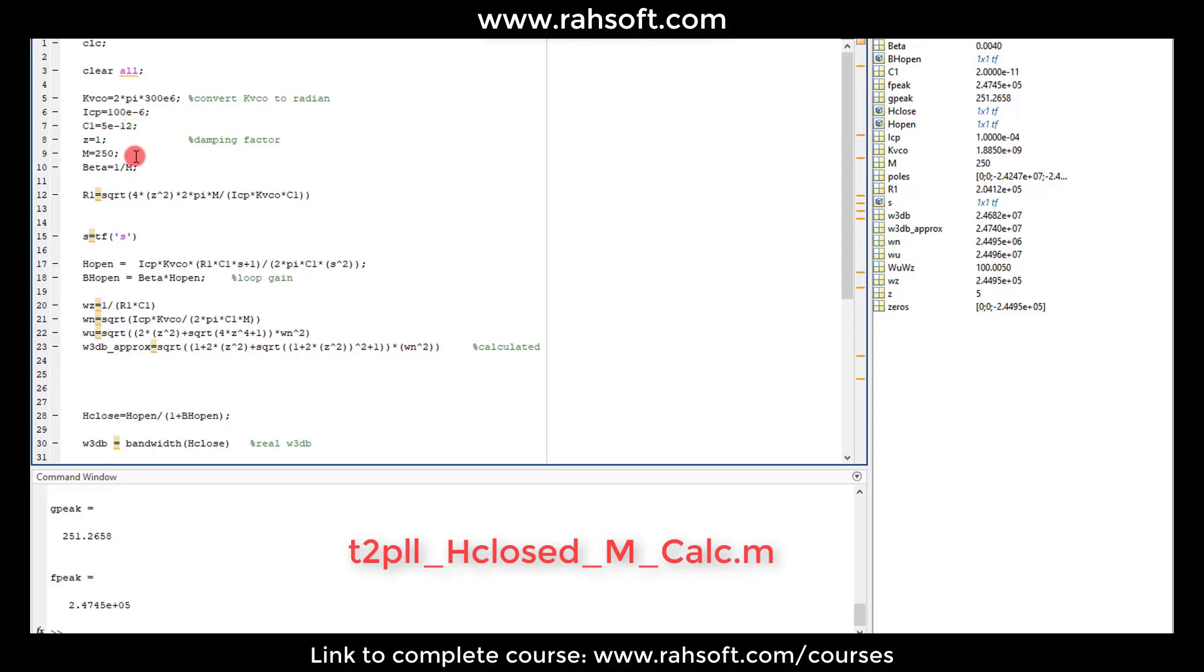So I'm going to start from this point. Everything is like the previous section. The M is 250. I'm going to assume the damping factor here is equal to 1 and I will go with that. So this is a special case number 1.